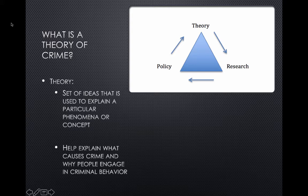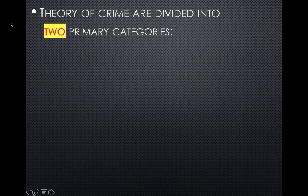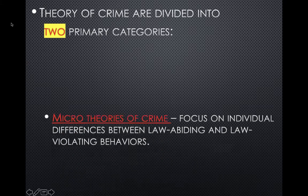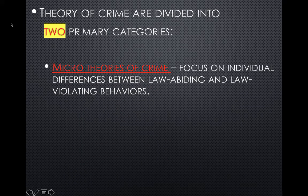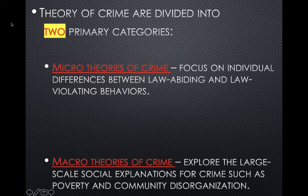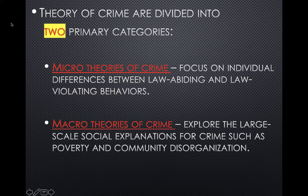The theory of crime is there to help explain what causes crime and why people engage in criminal behavior. It is divided into two primary categories. Micro theories of crime focus on individual differences between law-abiding and law-violating behaviors. Macro theories of crime explore the large-scale social explanations for crime, such as poverty and community disorganization.